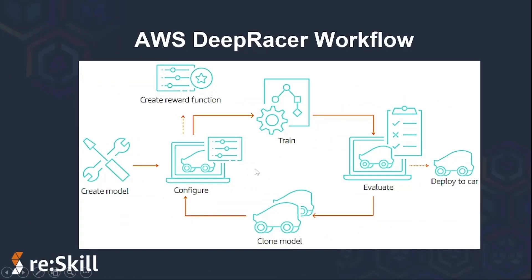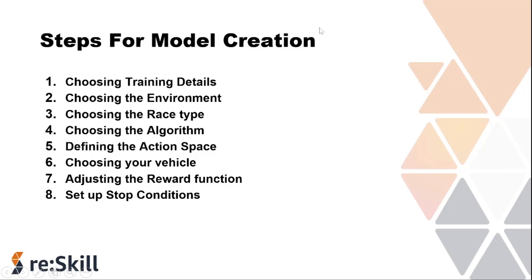Once your model gets trained, we can then evaluate it. The simulator yields the percentage of the lap completed for each of your runs, plus the overall time it took to complete each run. If you are satisfied with the training and evaluation of your model, you can clone it and start to tweak your configuration for increased performance. When you have a model that meets your expectations, deploy it to your car and get started racing on a physical track or compete in virtual events. Now let's review the steps we used to create our model — there are a total of 8 steps.